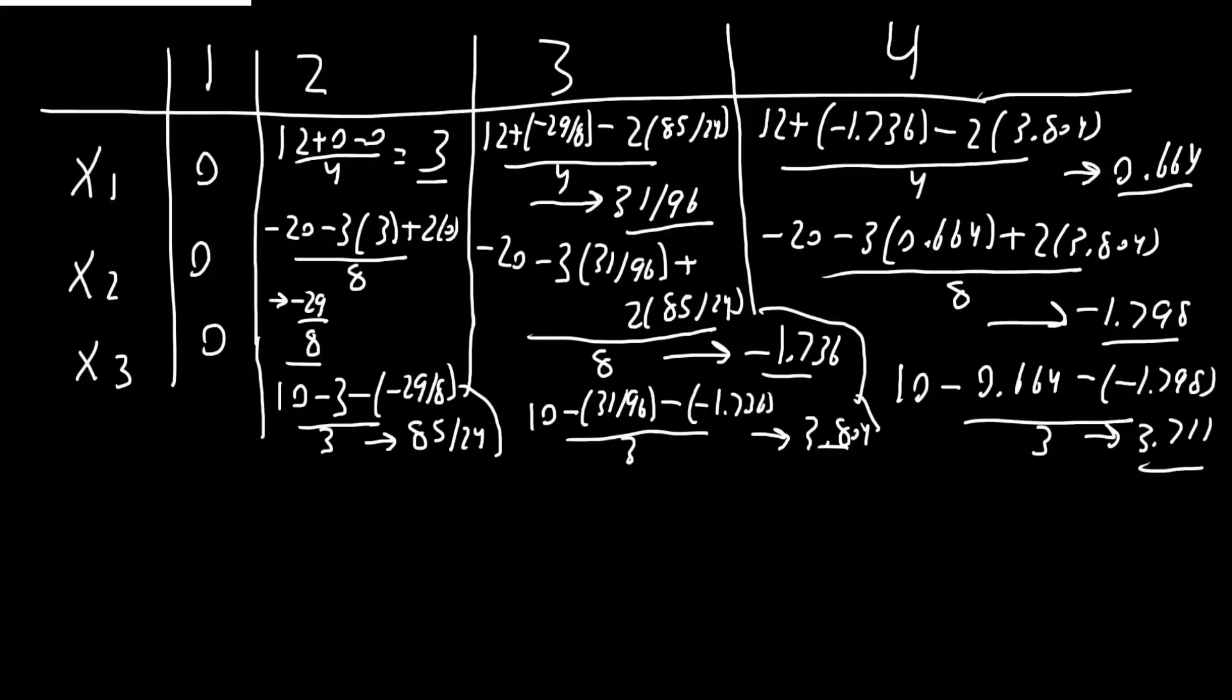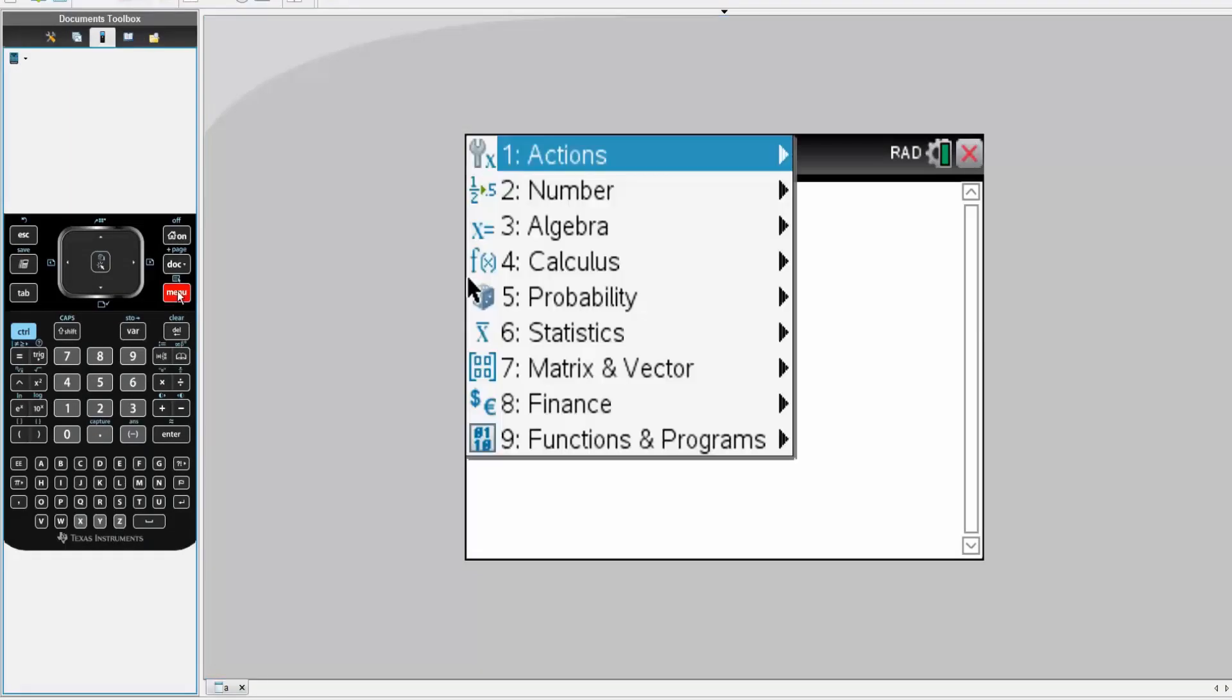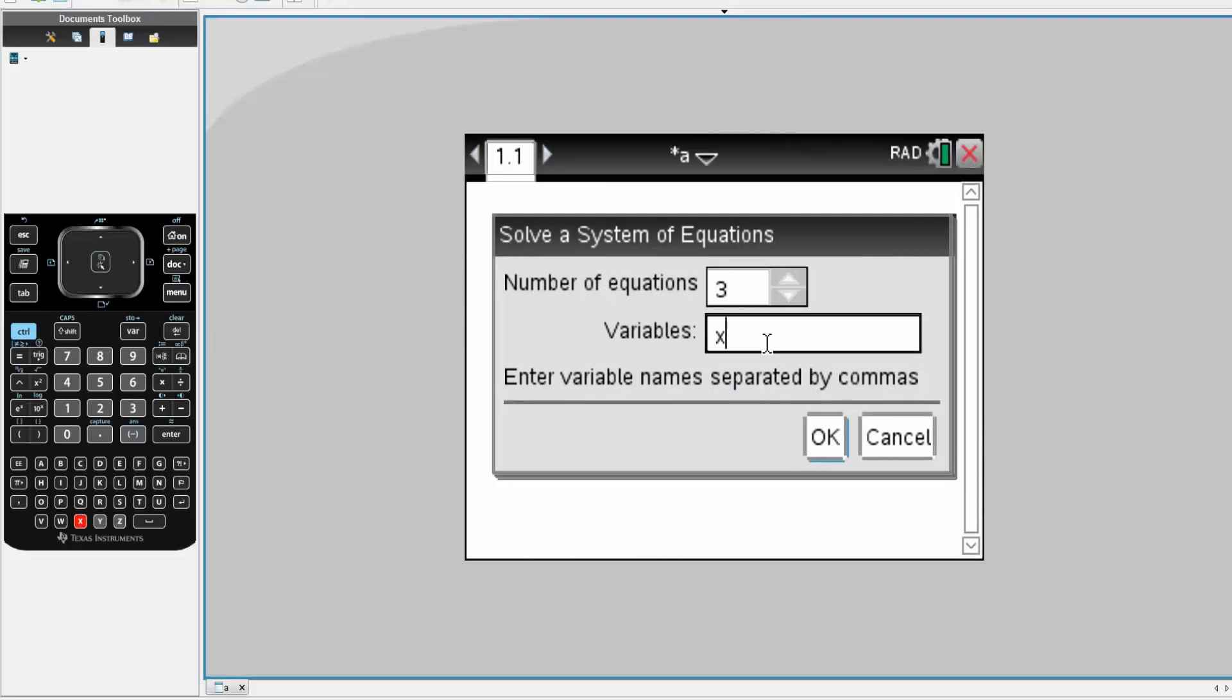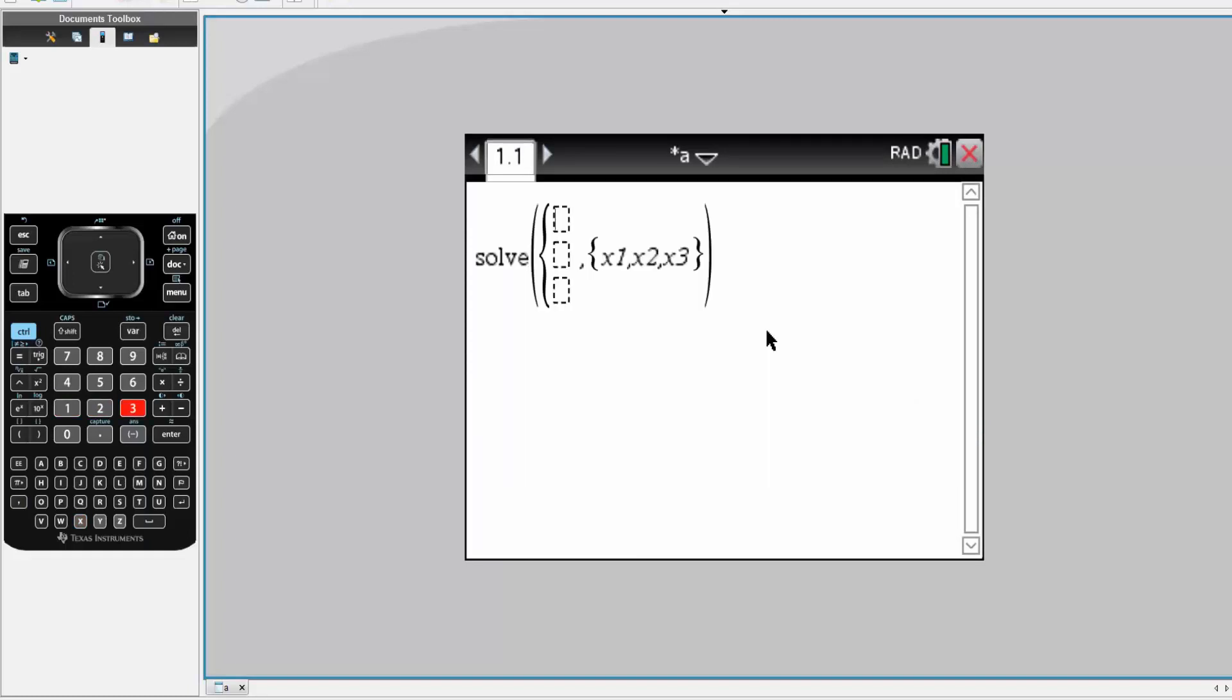So let's do that. So menu, algebra, solve system of equation 1. We have 3 equations. So we want to solve x1, x2, and x3. And so we now just need to write down the equations. So 4 times x1 minus x2 plus 2 times x3 is equal to 12. And 3 times x1 plus 8 times x2 minus 2 times x3 is equal to negative 20. Finally, x1 plus x2 plus 3 times x3 is equal to 10. And so simply, I hit Control-Enter.